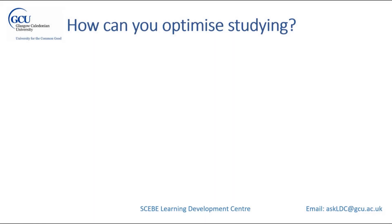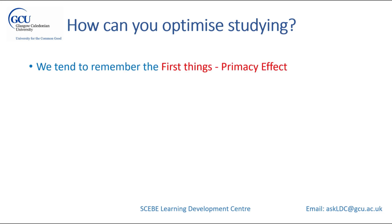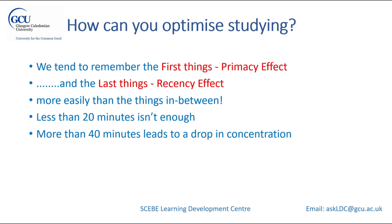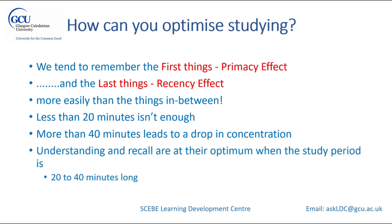Now how can you optimise studying? We tend to remember the first things we're told and the last things — called the primacy effect and the recency effect — and remember those much more easily than things in between. So in a two-hour lecture you're likely to remember the first and last things, while a big chunk in the middle vanishes. When you're studying, studying for less than 20 minutes isn't enough — you're just playing at it. However, more than 40 minutes for most people tends to lead to a drop in concentration. Understanding and recall are at their optimum when the study period is 20 to 40 minutes long.